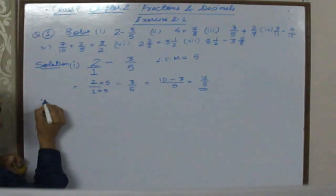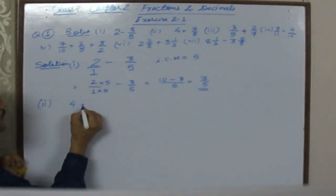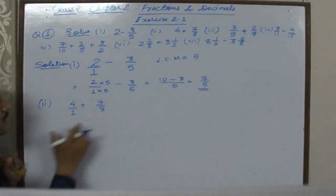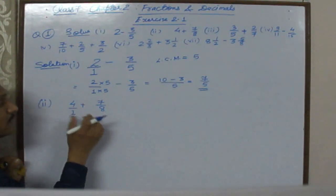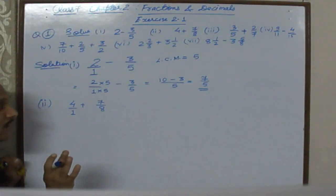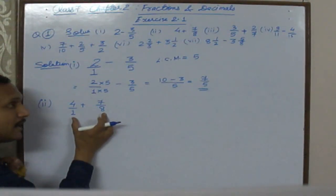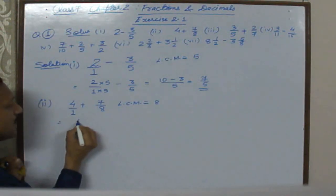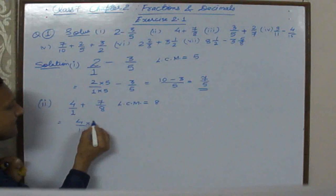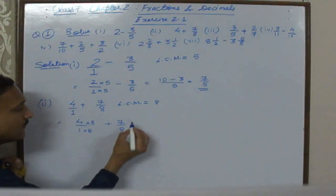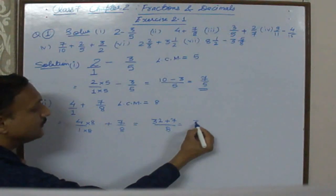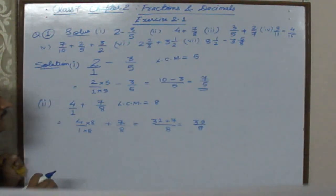Second part: 4 plus 7 by 8. Again, 4 is a whole number, so we write it as 4 by 1. Denominators are 1 and 8, which are not the same. LCM of 1 and 8 is 8. Multiplying 4 by 1 by 8, we get 32 by 8. So 32 by 8 plus 7 by 8 equals 39 by 8.